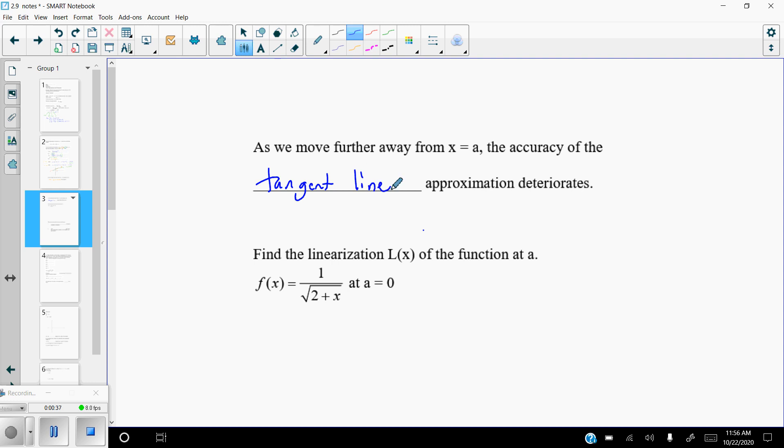So the accuracy of the tangent line approximation is going to get worse the further we move from a. If that's the case, we could always pick a different a value if we wanted to get a better approximation for a different place on the curve. The idea is to pick something that you would already know and then go from there to use that specific known place as an approximation.